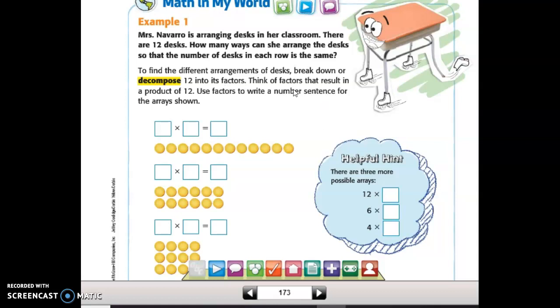So the different numbers that multiply to equal 12 are the factors of 12 that we're decomposing into. This array here is helping us figure out one equation. We have one row and 12 columns. So 1 times 12 equals 12. So these two are factors of 12. And yes, one and the other number will always be a factor.